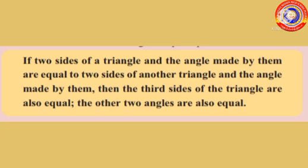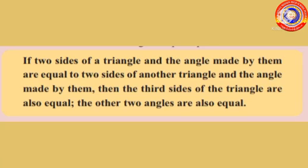From this we reach another general principle: if two sides of a triangle and the angle made by them are equal to two sides of another triangle and the angle made by them, then the third sides of the triangles are also equal and the other two angles are also equal.